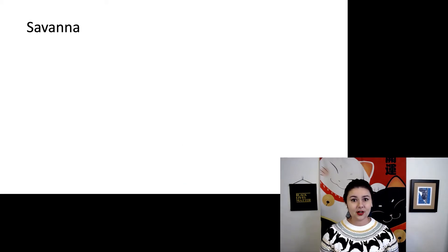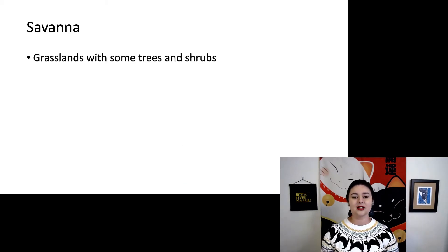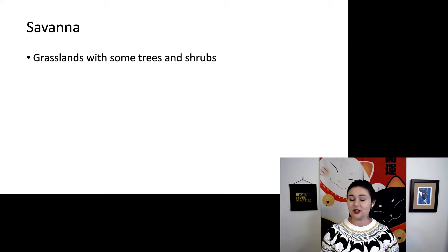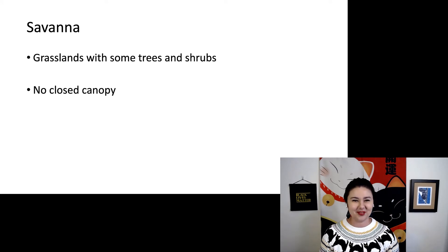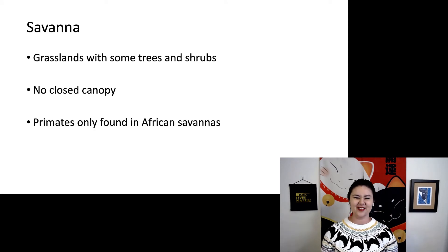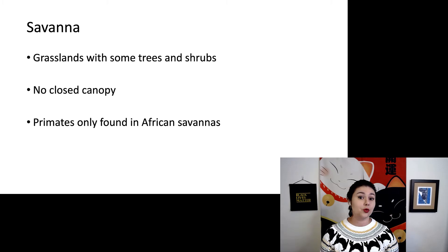We also find primates in a savanna. A savanna is a grassland with a few trees and shrubs — there is definitely not any semblance of a closed canopy. While there are several different savanna environments throughout the world, we only find primates in the African savanna. You can see there are a fair number of trees, but they aren't close together, and there is sunlight everywhere.